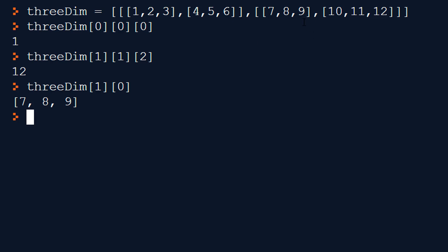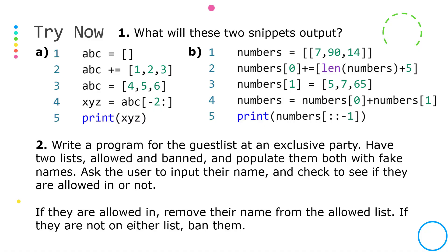I'd really recommend you have a play around — set some lists yourself and practice indexing and targeting individual items to get your head around how this works. Pause the video and have a go at these two questions. Question one is about predicting the output from two blocks of code, which might be a little tricky. Question two asks you to program a small program mimicking a bouncer checking a guest list at a party door — this will require what we looked at in this video plus if statements from the last video.